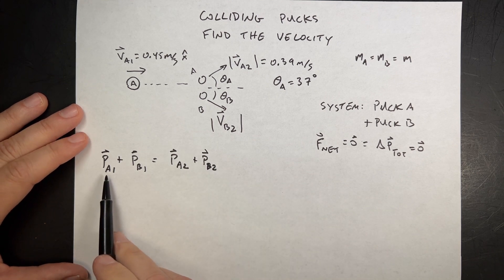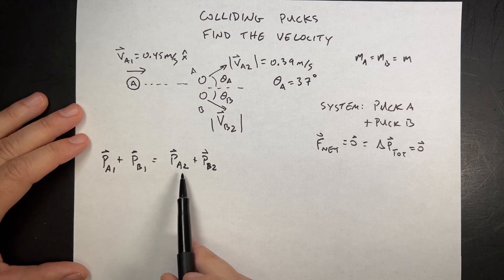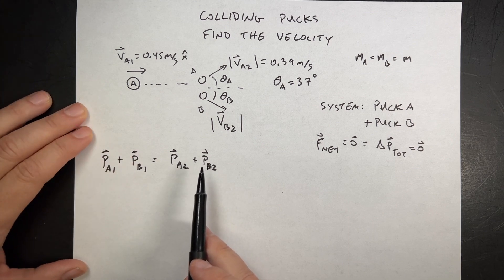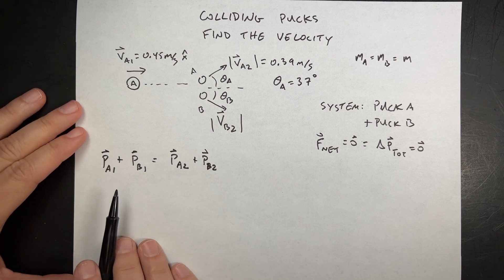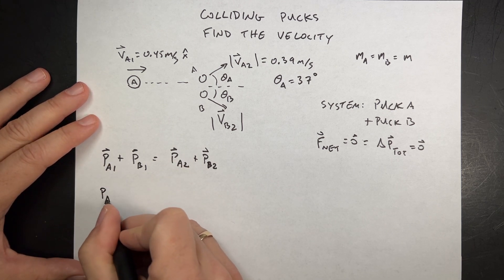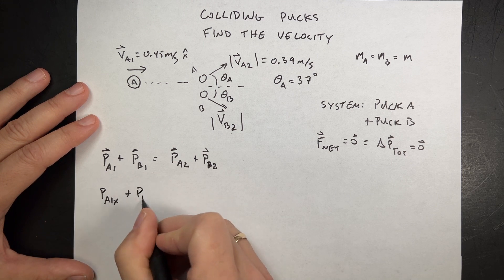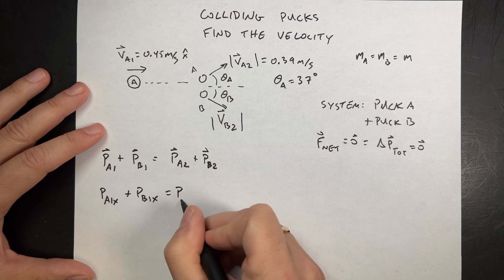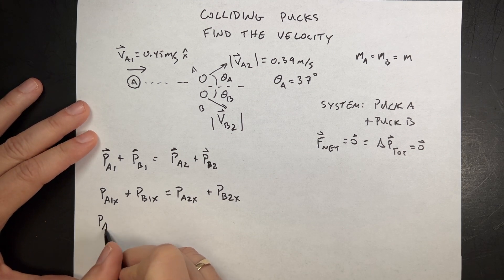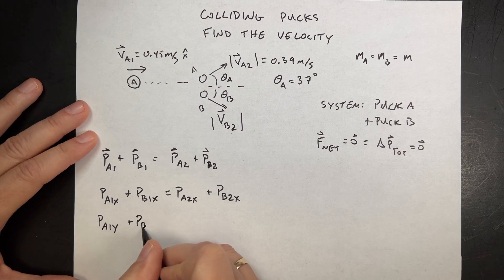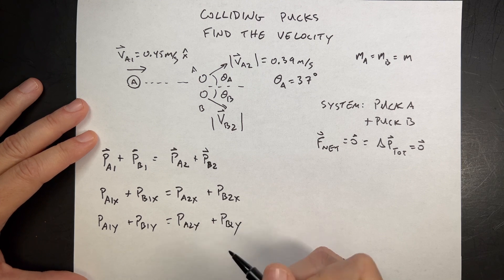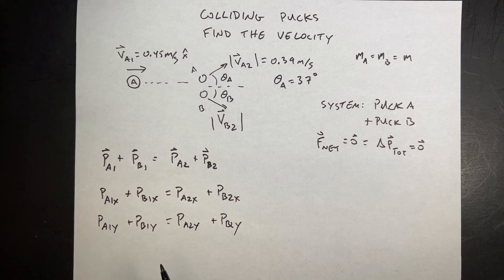PA1 is the momentum of puck A before the collision; PA2 is the momentum after the collision — those are all vectors. We have a simplification because PB1 is 0 — it starts at rest. So I'm going to write this as two scalar equations: PA1x + PB1x = PA2x + PB2x, and PA1y + PB1y = PA2y + PB2y.